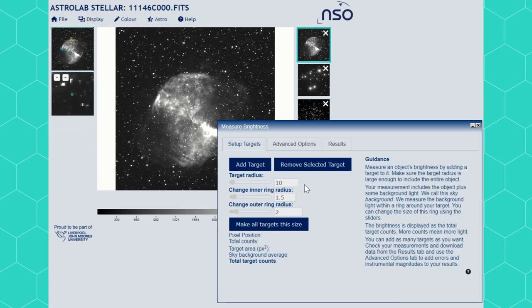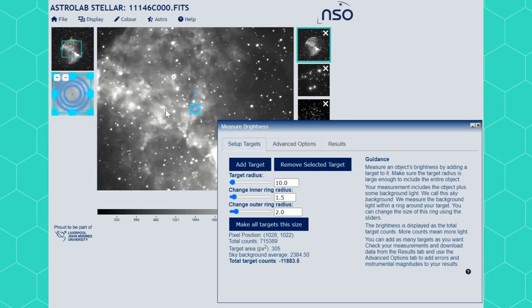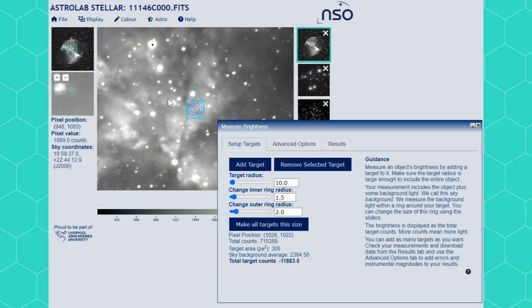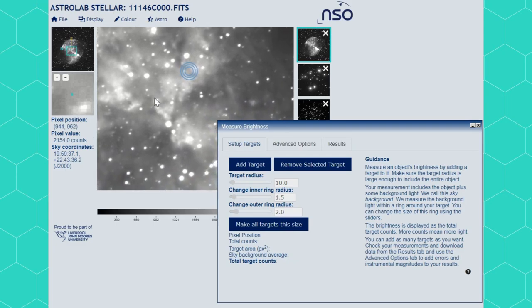To add a circle around the object you want to measure click add target. You can zoom in on your image by using the mouse scroller or using zoom in the display menu. You can then drag the observation until you can clearly see your target. I am going to measure the white dwarf star in the centre of this planetary nebula.